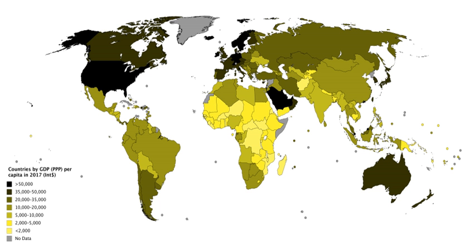GDP per capita does not, however, reflect differences in the cost of living and the inflation rates of the countries. Therefore using a basis of GDP per capita at Purchasing Power Parity is arguably more useful when comparing differences in living standards between nations.